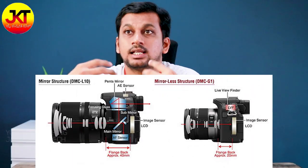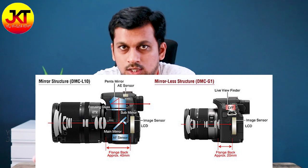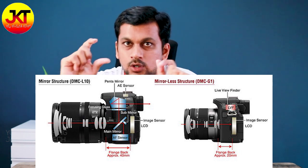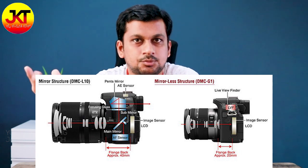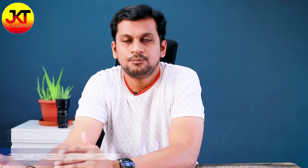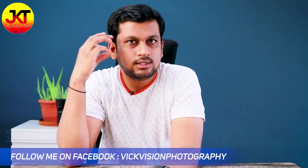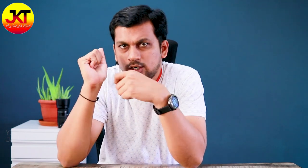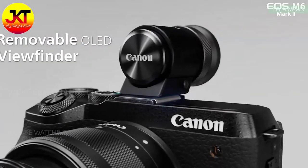In DSLR, you set the exposure meter and change the settings to fix the image. But in the mirrorless camera, there is no mirror — you use an electronic viewfinder. When you look through the viewfinder in mirrorless, you see a digital preview of the image.